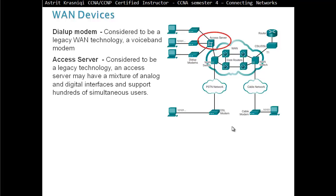Access server. This is also considered to be legacy technology. An access server might have a mixture of analog and digital interfaces and supports hundreds of simultaneous users. For example, if we were teleworkers, this is our teleworker computer, and we dial up to our network, for example at work, the access server is in charge of these modems. An access server will give you a line when you dial up. The access server will control that line that you are establishing to get inside the network.